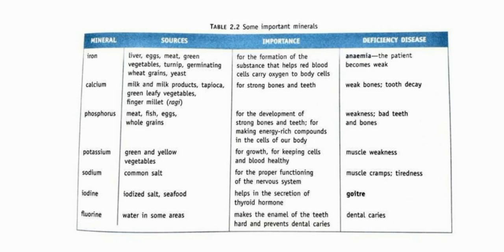Next mineral is potassium. Sources are green and yellow vegetables. Potassium is important for growth and for keeping cells and blood healthy. If there is a deficiency of potassium, muscle weakness can occur.